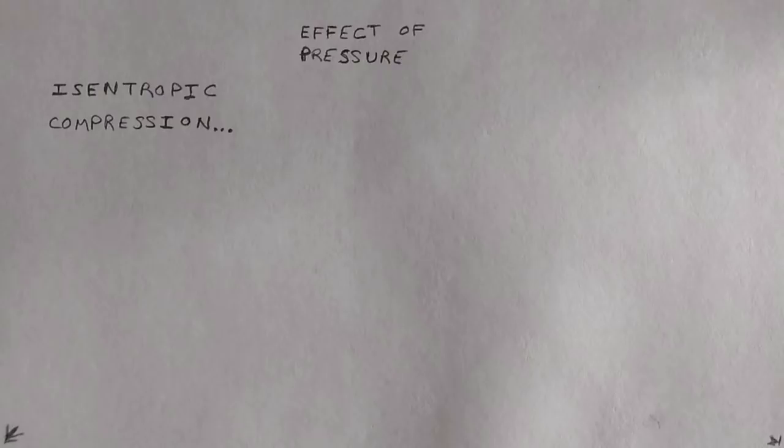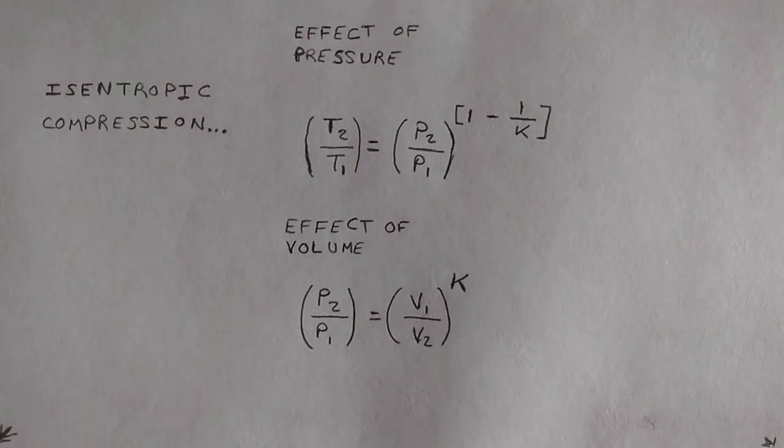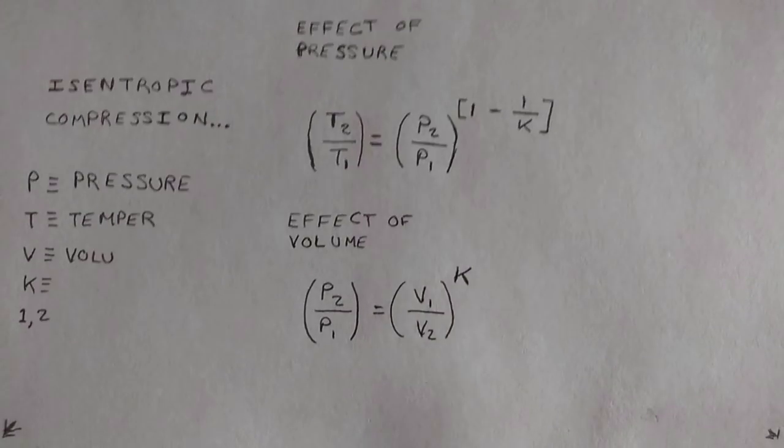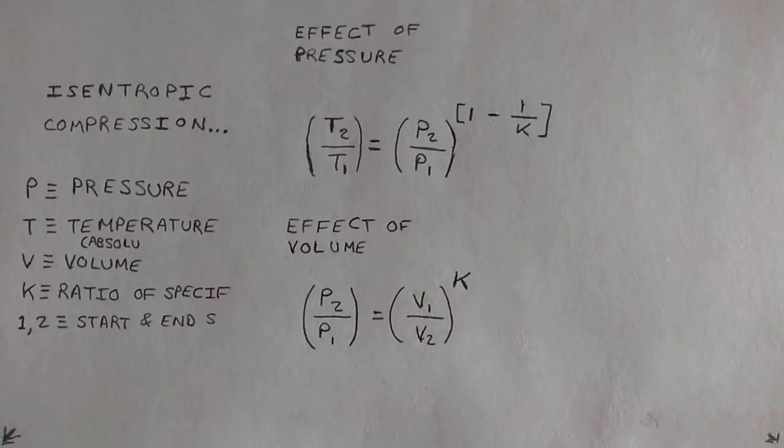Fortunately, thanks to thermodynamic principles, we can actually approximate the heat from compression inside of a diesel engine via this process known as isentropic compression. Now, isentropic literally just means that entropy is constant. Now, basically putting that in simpler terms, it means that we're assuming this compression occurs without any sort of friction loss, any sort of heat loss or heat gain to the fluid with which we are compressing. In this case, it'll be air.